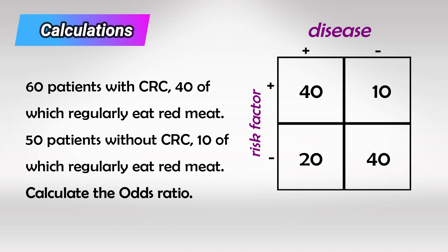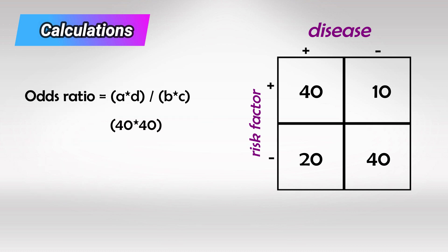Like we said, odds ratio is A multiplied by D over B multiplied by C. So we have 1600 over 200, and the odds ratio is 8. And the interpretation is that red meat eaters are 8 times more likely to develop colorectal cancer.